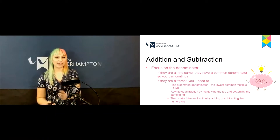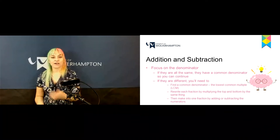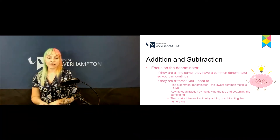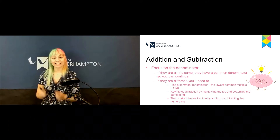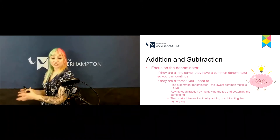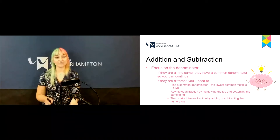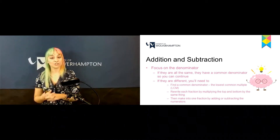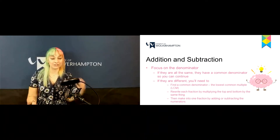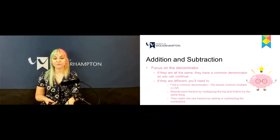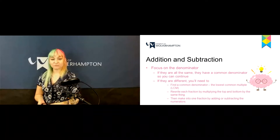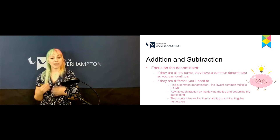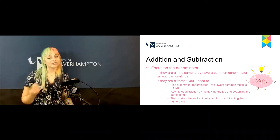Now we'll look at addition and subtraction of algebraic fractions. To do this you need to focus on the denominator. If they have the same denominator you can just continue with the addition or subtraction. However, if they are different, you'll need to find the common denominator — the lowest common multiple of the two numbers — then rewrite each fraction by multiplying the top and bottom by the same thing, and combine them into one fraction.